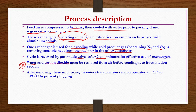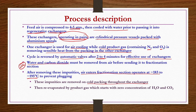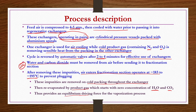After removing these impurities, air enters the fractionation section operating at minus 183 to minus 195 degrees centigrade to prevent plugging. These impurities are removed on cold packing throughout the exchanger, then re-evaporated by product gases N2 and O2 which start with zero concentration of H2O and CO2. This provides an equilibrium driving force for the vaporization process.